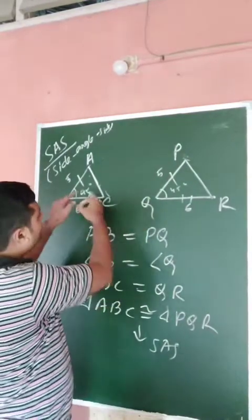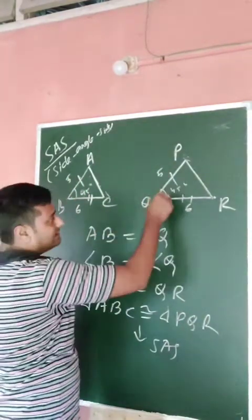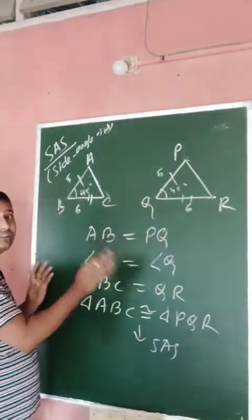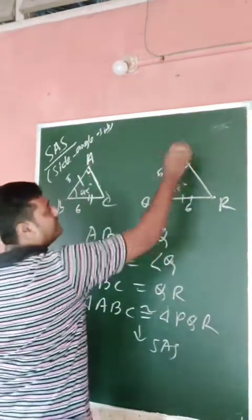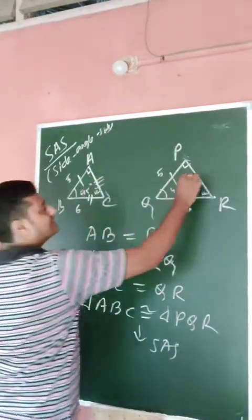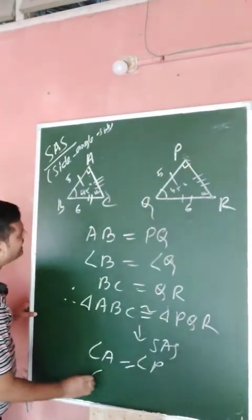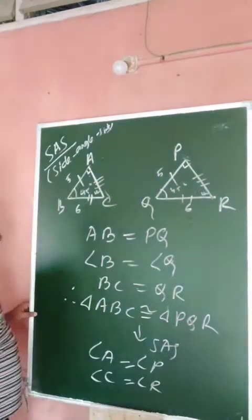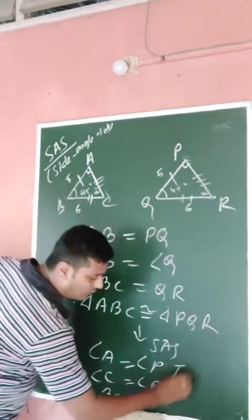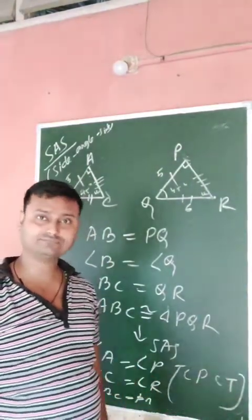If two triangles are congruent, then the remaining corresponding parts are also equal. In this case we proved congruence using AB, angle B, and BC (corresponding to PQ, angle Q, and QR). So the remaining parts — angle A equals angle P, angle C equals angle R, and side AC equals side PR — are known as CPCT: Corresponding Parts of Congruent Triangles.